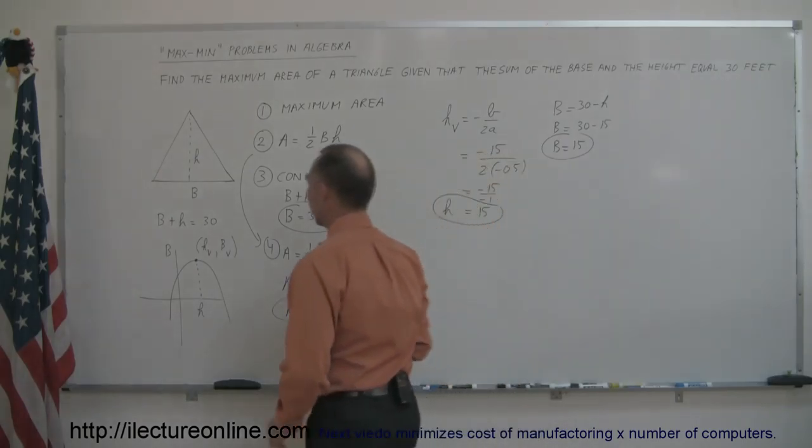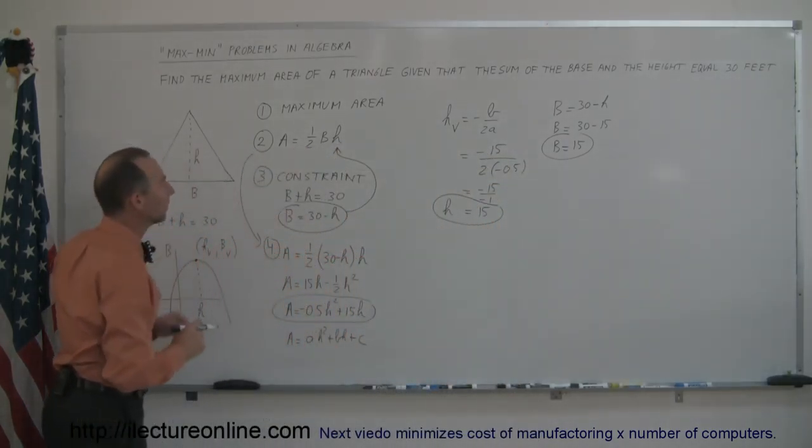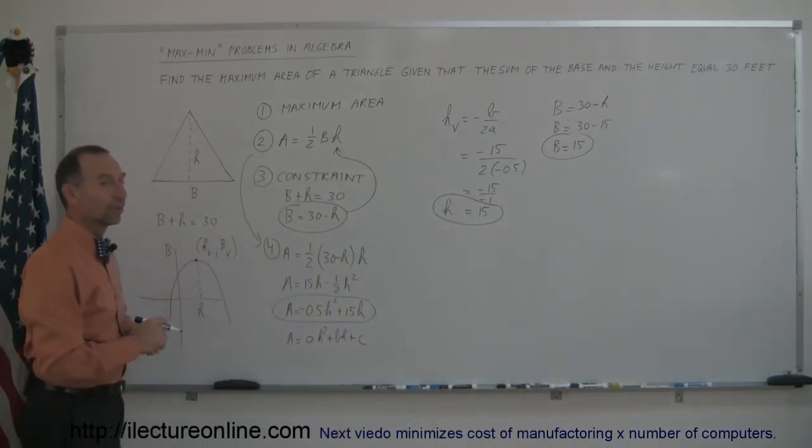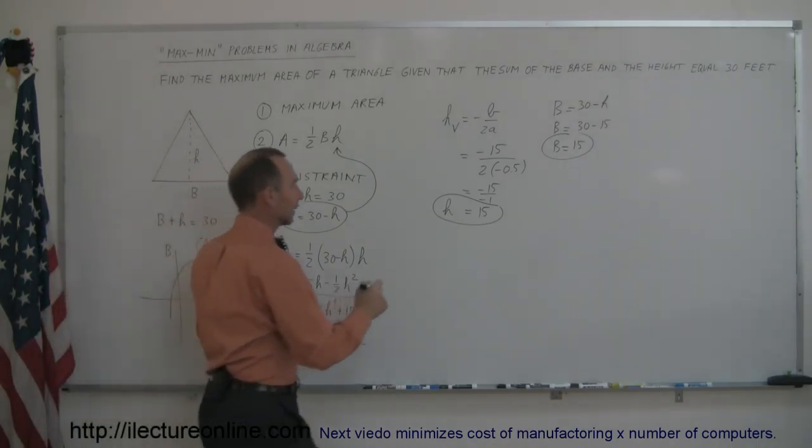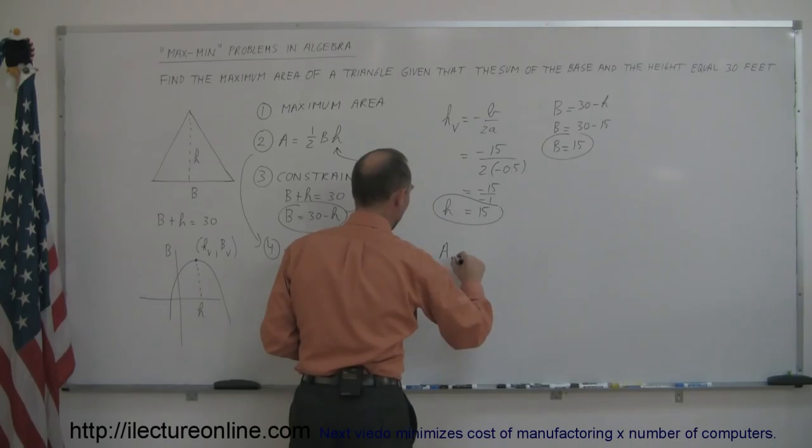So in other words, if the sum of the base and the height is equal to 30 feet, the largest area triangle that can be made is made when you let h be equal to 15, and the base equal to 15, and that gives us the maximum area, A max.